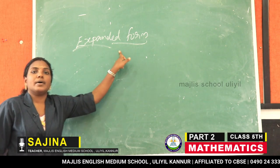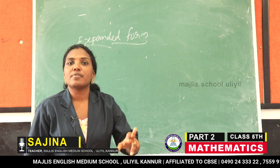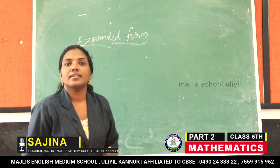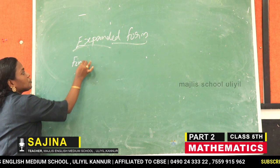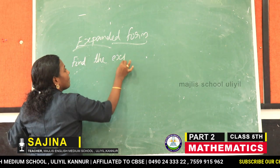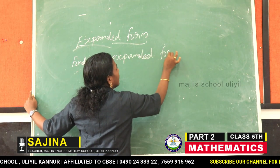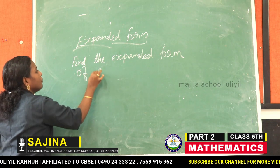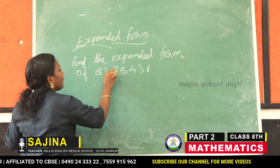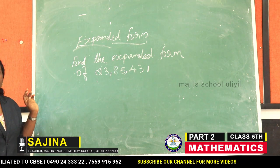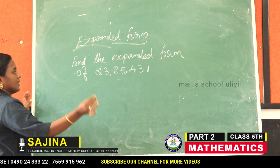Expanded form of a number is the sum of the place values of the digits in a number. For example, find the expanded form of this number.